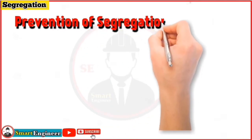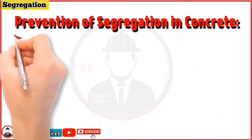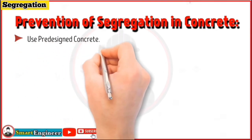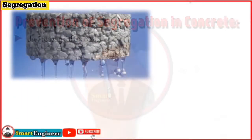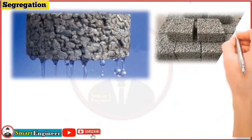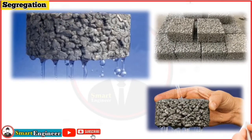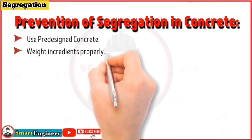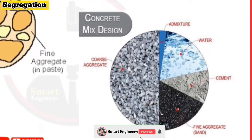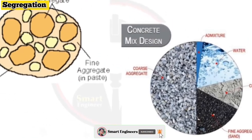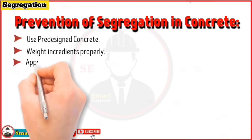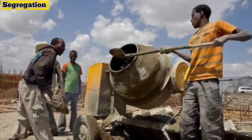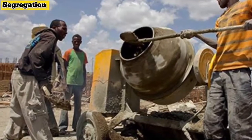Now we understand the causes of segregation. To prevent segregation, the following are useful tips. Number one, always use concrete which is pre-designed with the optimum quantity of water — not too wet, not too dry. Number two, weigh the ingredients of concrete properly before mixing; they should be in the proportion according to the concrete mix design.